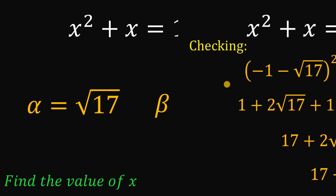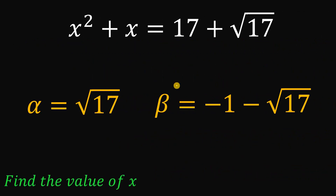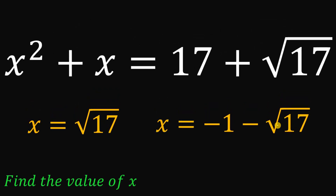So we have two possible values of x. x sub 1, or alpha, equals square root of 17, and x sub 2, or beta, equals negative 1 minus square root of 17. Given the equation x squared plus x equals 17 plus square root of 17, we found two values of x that satisfy the equation: square root of 17 or negative 1 minus square root of 17. And with that, we are done.